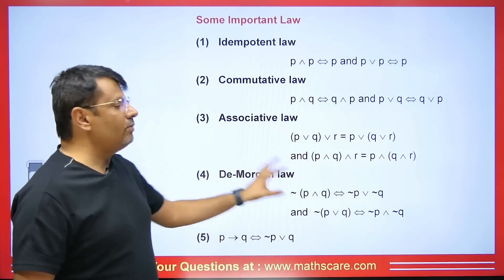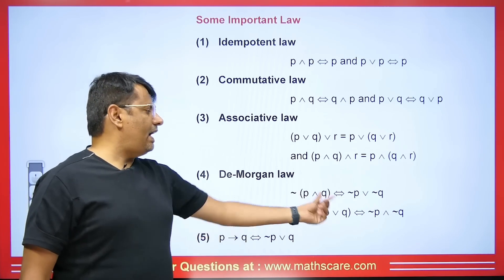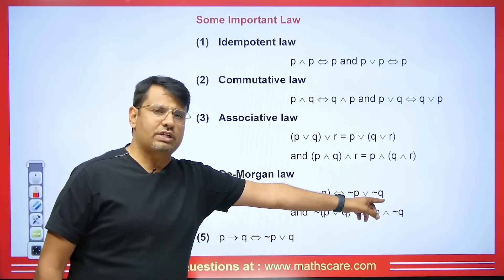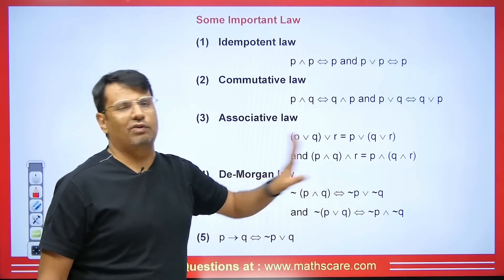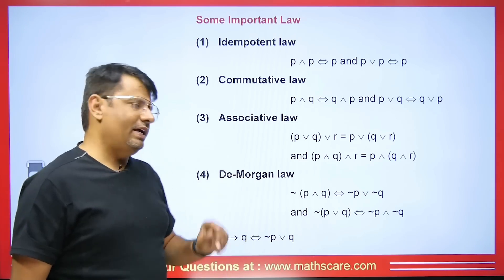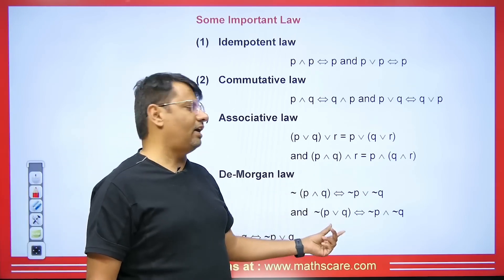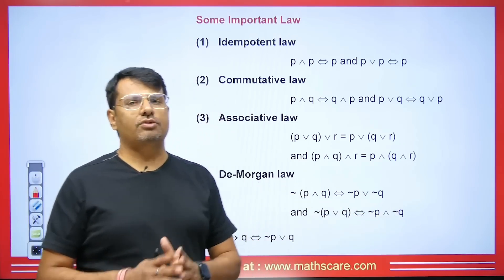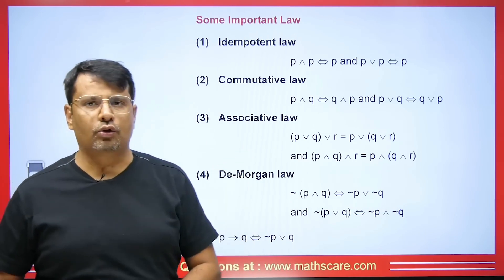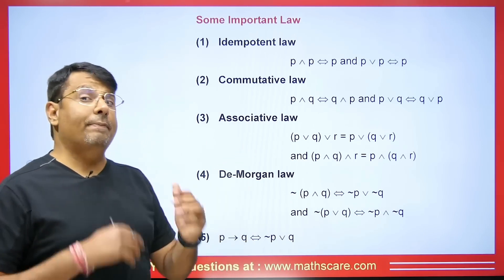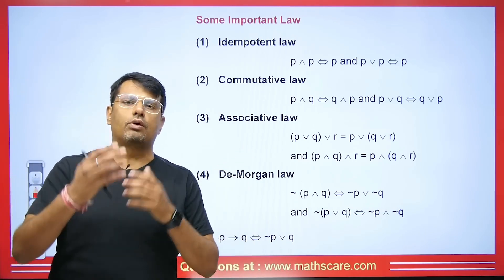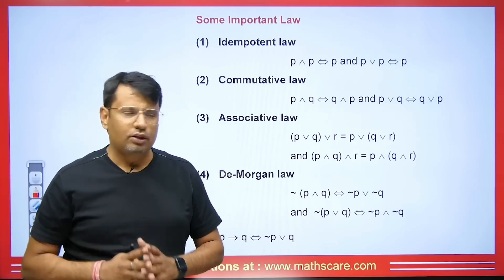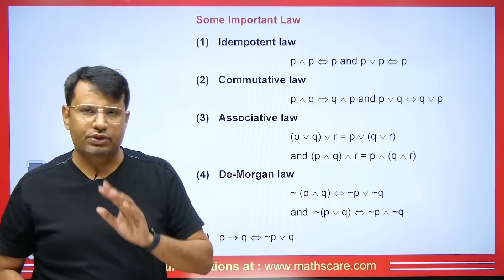We will talk about De Morgan's law. If we have a negation on (p AND q), the negation will be distributed to both and the AND will be converted to OR. Similarly, if we have a negation on (p OR q), it will be converted to AND and the negation will be distributed on both sides. This is the same De Morgan's law present in set theory — when we take the complement of (A union B) or (A intersection B).